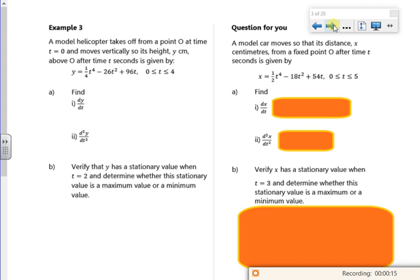So a model helicopter takes off from a point O at time t equals 0 and moves vertically, so its height is given by that equation there.